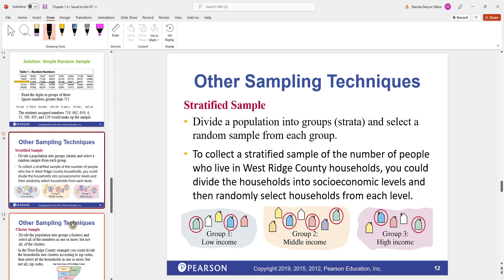Another sampling technique is a stratified sampling method. Here you divide a population into groups, and you call these groups your strata. And then you select a random sample from each group. To collect a stratified sample of the number of people who live in West Ridge County households, you can divide the households into socioeconomic levels and then randomly select households from each level. You can have a low income group, middle income, and high income. Each one of these would be my strata. And what you'll do is randomly pick within each strata. As you can see, I picked two here from the low income, I picked three here from the middle income, and I picked two from the high income.